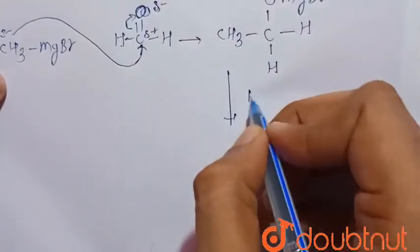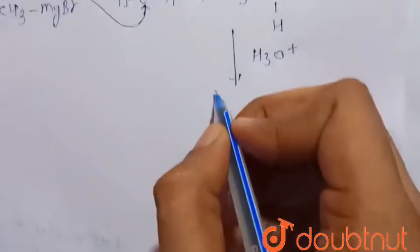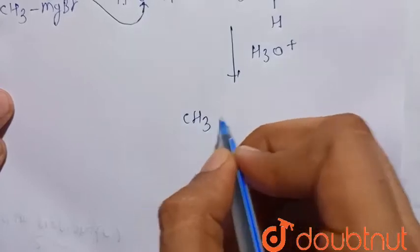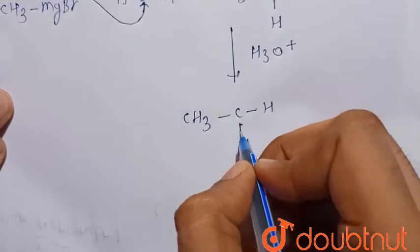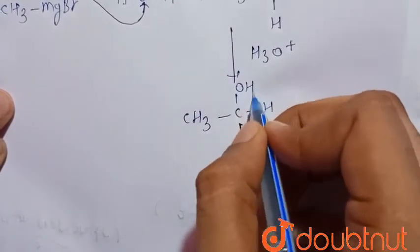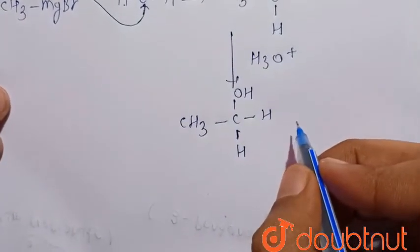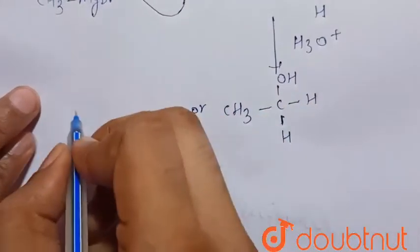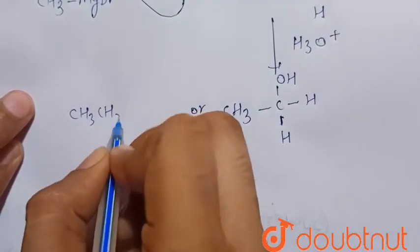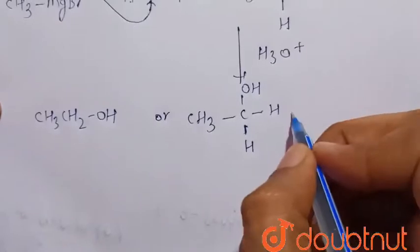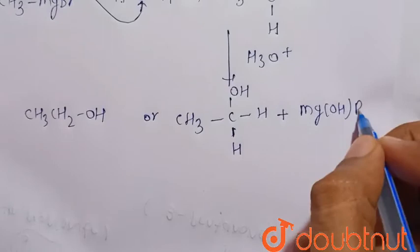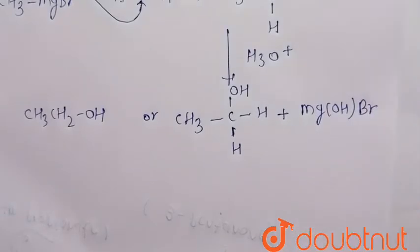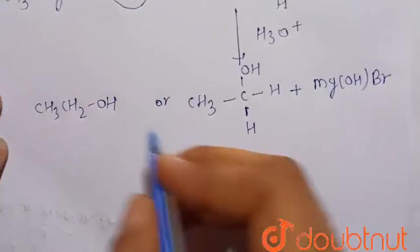Now it is hydrolyzed. There is the formation of CH3CH2OH, that is ethanol, and the side product Mg(OH)Br, magnesium bromide hydroxide. The main product is ethanol.